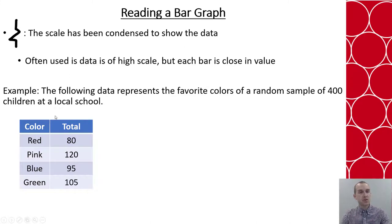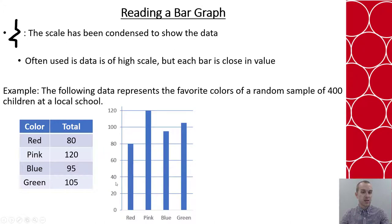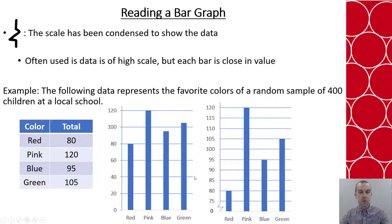Say that instead of only 50, we were able to sample 400 children at a local school for their color preferences. Same four colors, but the numbers have changed. When we put these numbers into a bar graph, part of the problem is the graph gets really tall — the numbers are spread by 20s — and you end up with bars that fall between numbers, so you're guessing if you don't have the table. By using the condensing format, we can start at 75, and now the major axes change to every 5, allowing all four colors to line up at a major axis, making the graph easier to read.